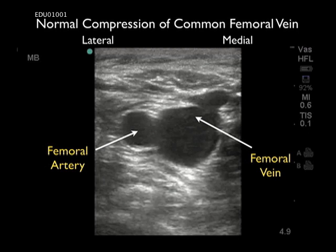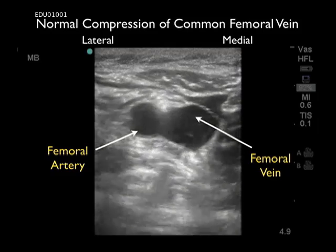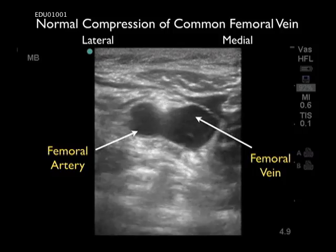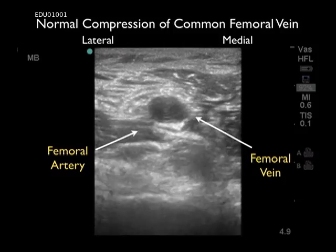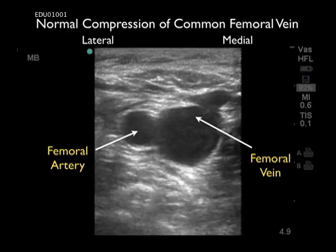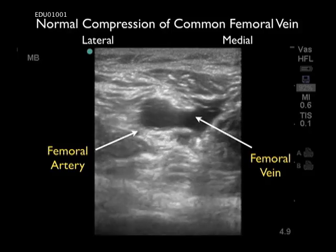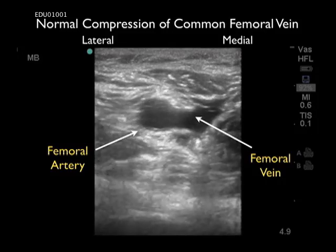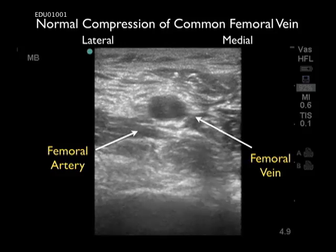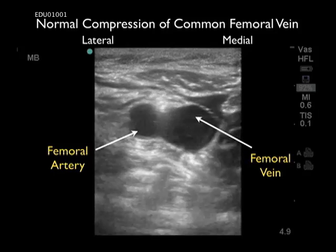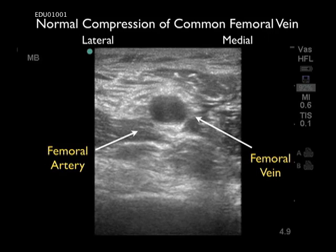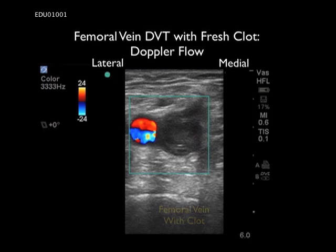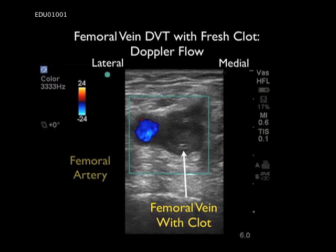This video clip illustrates normal compression of the femoral vein. At this level we see the common femoral vein and artery. We have the high frequency linear array probe placed in a side-to-side configuration with the probe marker laterally oriented. Notice that the femoral vein, towards the right or medial, completely compresses with probe pressure, indicating the absence of a DVT. This would be considered a completely normal DVT examination. We can also see a little bit of the saphenous vein coming off the top of the femoral vein. We can use Doppler to help in identification of the femoral vessels.